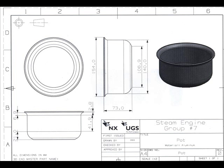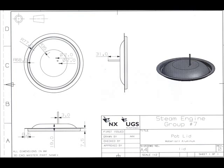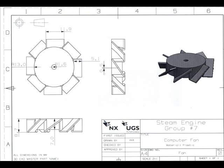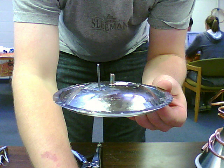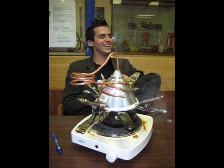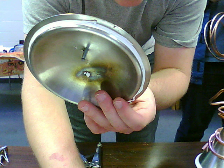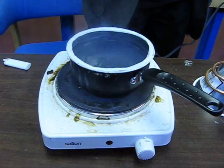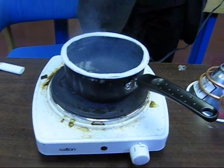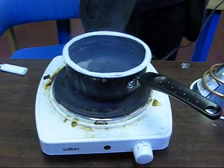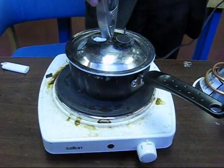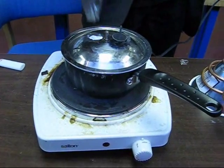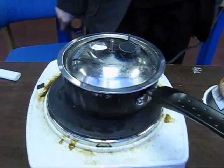Group 7 decided to use the expansion of steam from boiling water to drive a steam turbine. Once the steam passed through the turbine, it would then be channeled through a condenser in order to capture waste heat. Our basic need with this design was a vessel in which to boil water and create a pressure gradient to atmosphere.